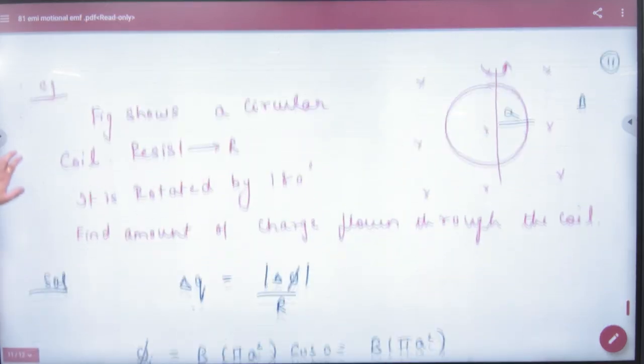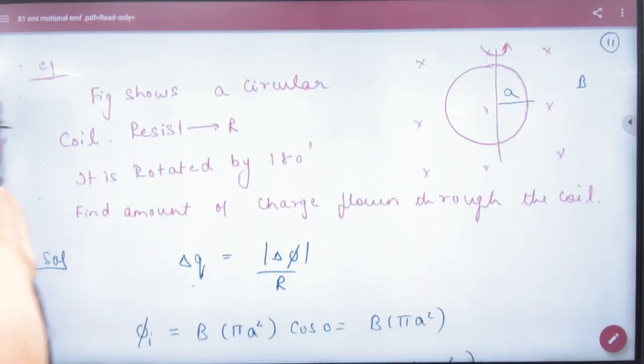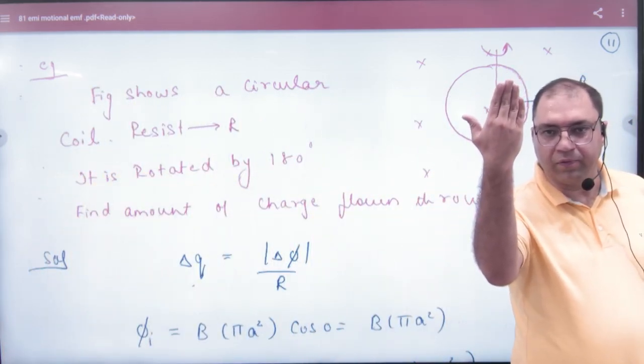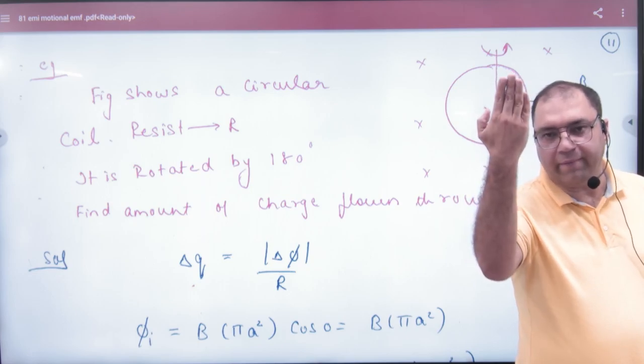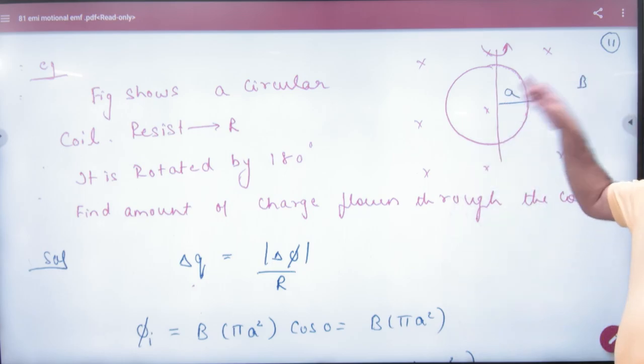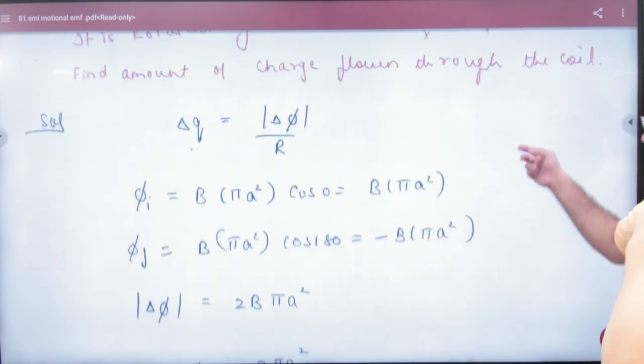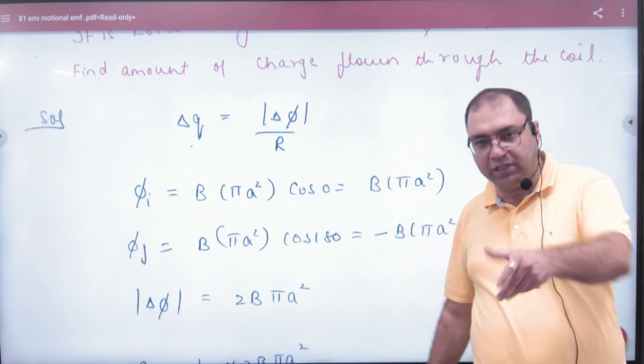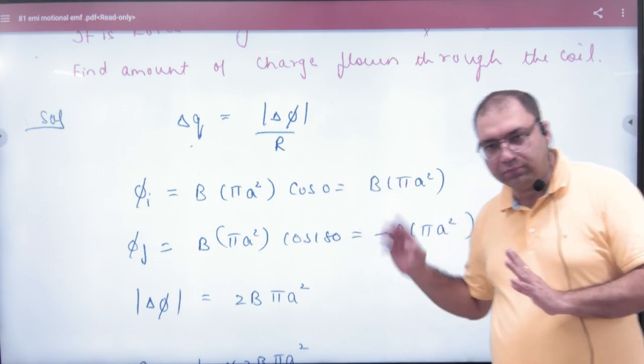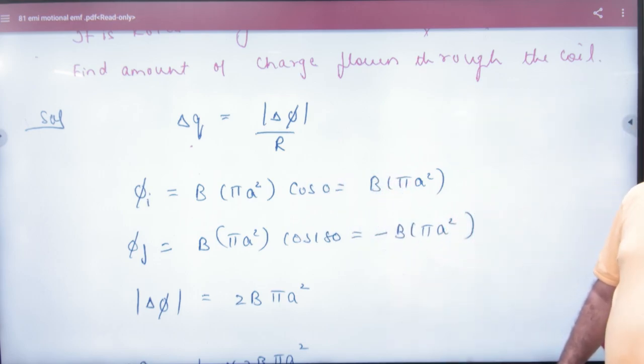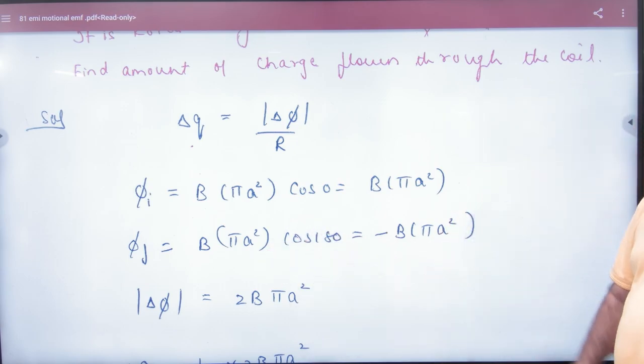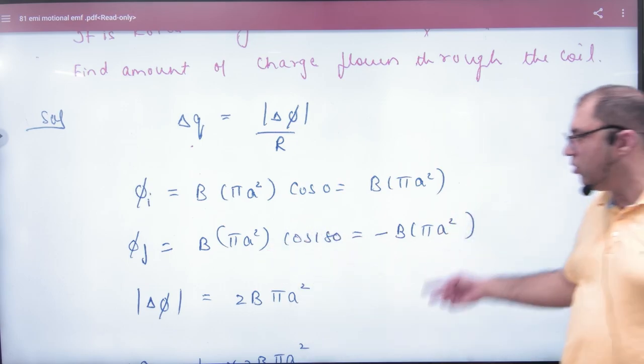Example is the question. You have a loop. You will need the flux to change it. If you think first B is also in the area vector, B is also in the area and the angle is zero. So what will be the initial flux? B, A, area, cos 0. If you took 180, what was the angle of 180? B into area into 180. So what will be the change in flux? Both minus the magnitude.